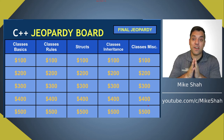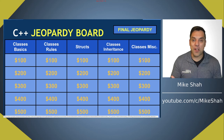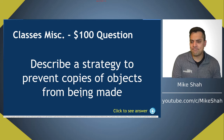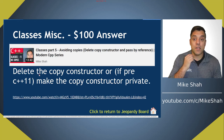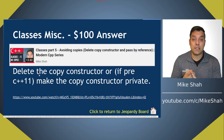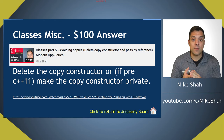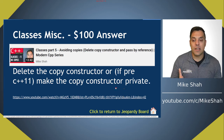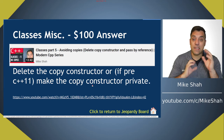Our final category: miscellaneous class questions from interviews. For 100: describe a strategy to prevent copies of objects from being made. In C++11 and beyond, you can use the delete keyword to delete the copy constructor, preventing initialization by copy or passing by value. Alternatively, you can make the copy constructor private, which also prevents it from being called because it's encapsulated in your class.